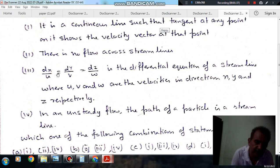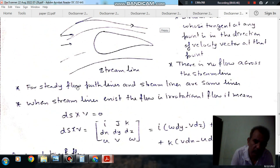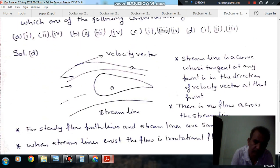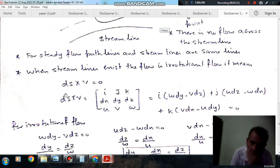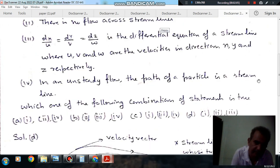So, dx/u = dy/v = dz/w is the differential equation for a streamline. For steady flow... sorry, dx/u, dy/v and dz/w is the differential equation for a streamline, where u, v, w are the velocities in direction x, y and z.